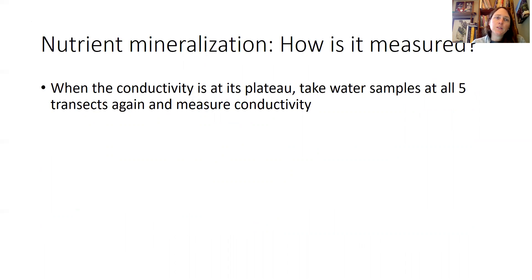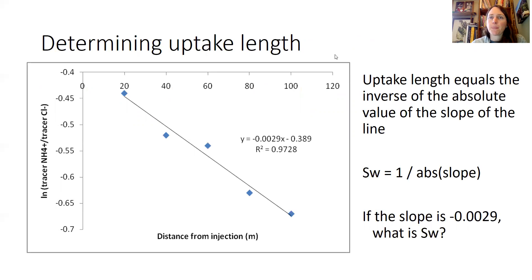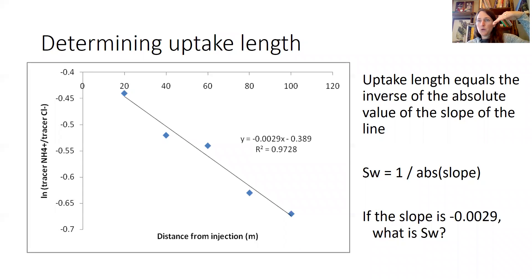We tend to use a Marriott bottle or some fancy electronic pump. Once you see conductivity is at a plateau, you take water samples at all five transects and measure conductivity at each, giving you a sense of overall nutrient mineralization rates and helping you calculate uptake length. To calculate uptake length (SW), SW equals the inverse of the absolute value of the slope of the line — we measure the natural log of the nutrient-to-tracer ratio (e.g., ammonium to chloride) versus distance downstream from the injection site, and calculate the slope.